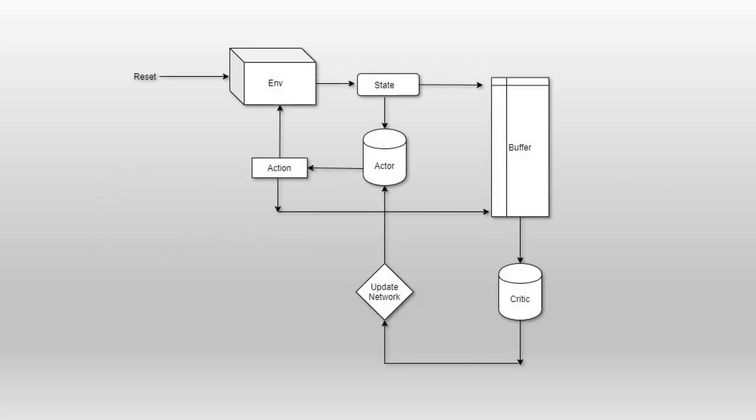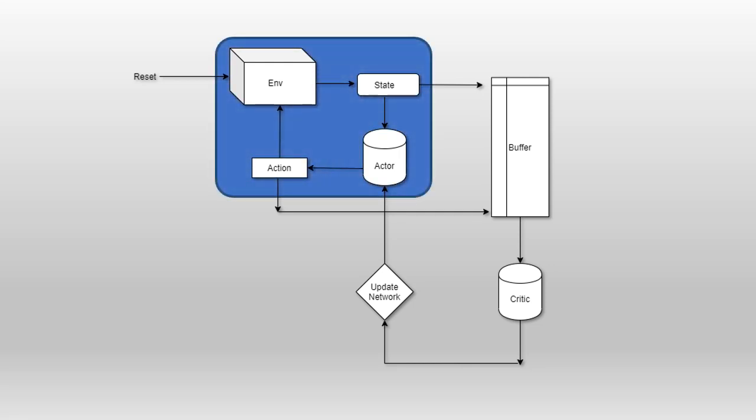This is a flowchart of how the DDPG algorithm works. The environment provides us with the current state which we feed into our actor network, which tells us the optimal action that we need to take. Once we take this action, we feed it back into the environment and obtain a reward.